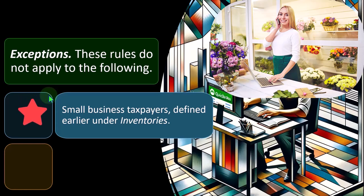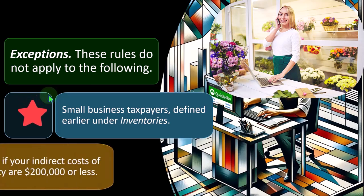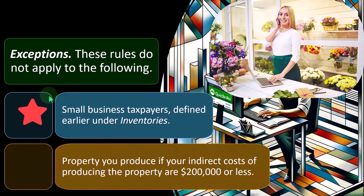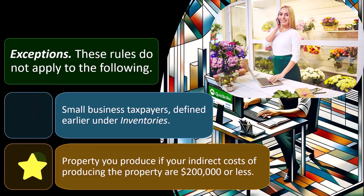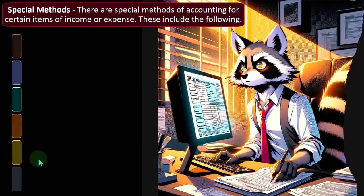And not only in the current year, but also thinking forward — is this going to lead me to have to change my accounting method in the future, which is kind of a pain? We have to ask permission or follow certain rules to do so. We'd like to be as consistent as possible if we can. Additionally, if the indirect cost of producing property you produce is $200,000 or less, there may be exceptions available.